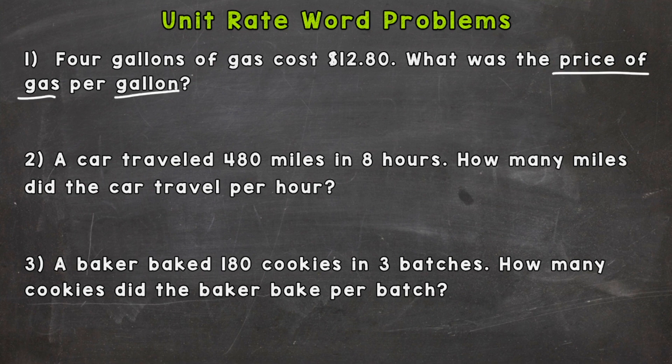So price of gas needs to come first in your fractional ratio. So that's $12.80, that's going to be our numerator. Our denominator is going to be the gallons of gas which there are four. Now we need to get that to a unit rate. So we need a denominator of one. So in order to get a denominator of one we need to divide that four by four. So four divided by four is going to give us that one gallon or a denominator of one.